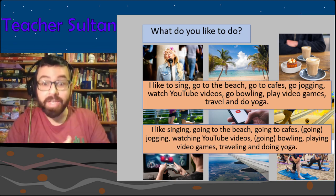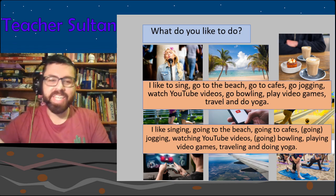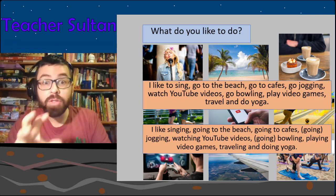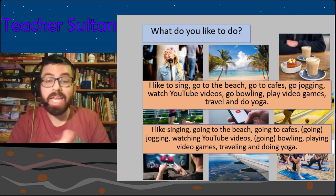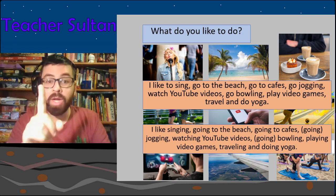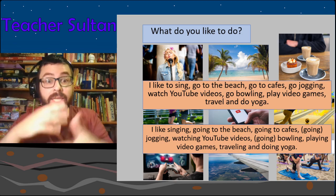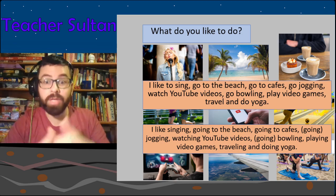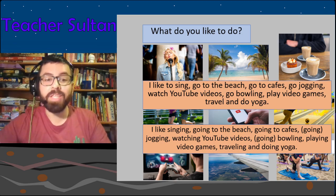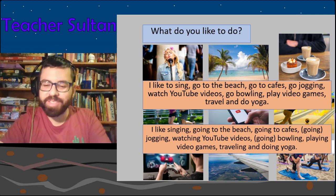If you're having trouble, go back to Lesson 6 Part 1 and watch again. Keep learning the vocabulary — the names of the different hobbies and activities.